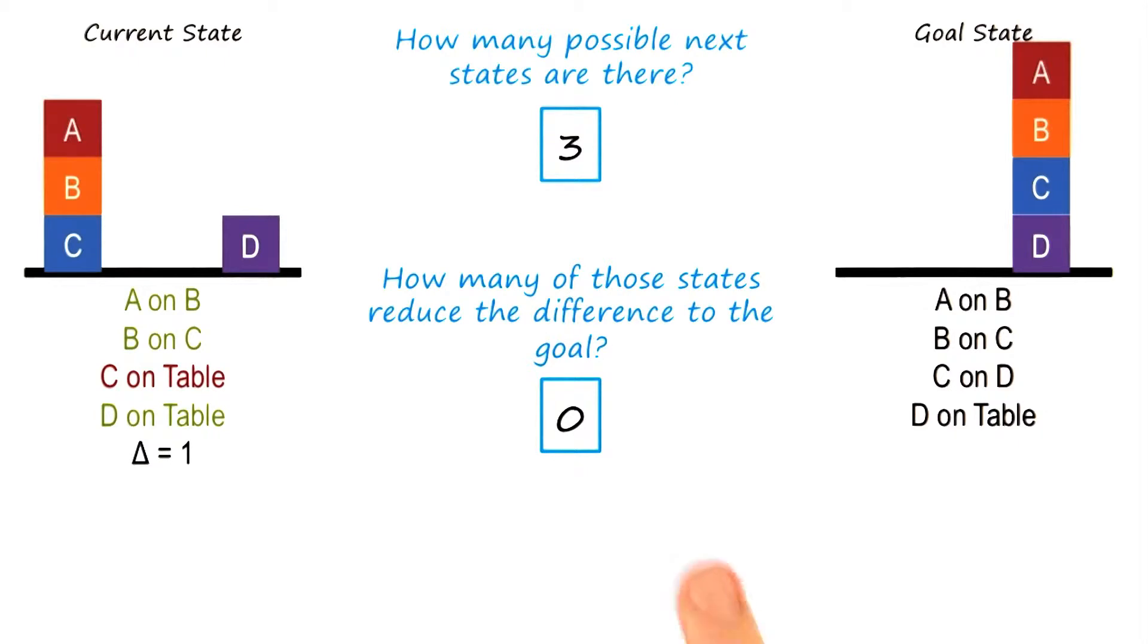The problem is that none of those states reduce the difference to the goal. And in fact, all three of those states move us further away from the goal. If we put D on A, then we no longer have D on the table. If we put A on the table, or A on D, then we no longer have A on B.